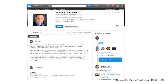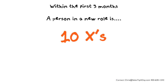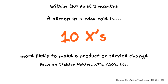When you bring these results up, you want to go through them one by one. And it sounds tedious, but it's well worth it. You look for anyone who has a new position — a new position to me would be anything that's less than about three months. A person in a new role is 10 times more likely to make a product or service change. This is an excellent opportunity to focus on the right decision makers, such as vice presidents, CXO level, managers, owners, and presidents in organizations, to get your product or service in or at least start having that discussion.